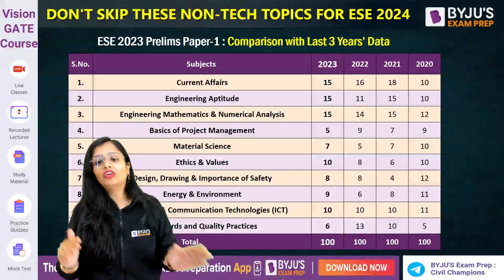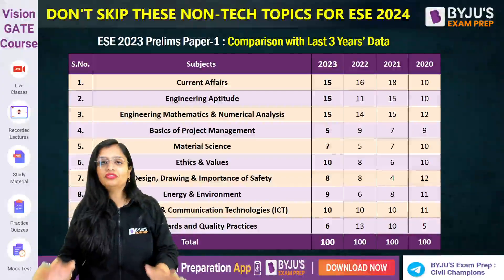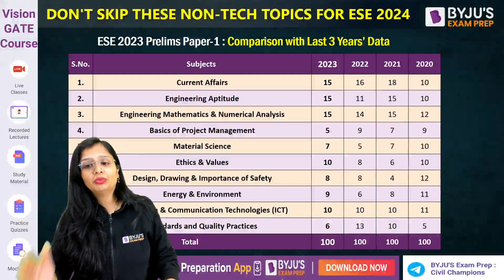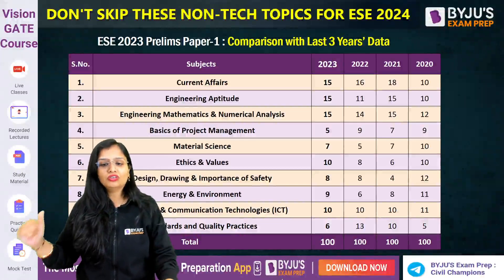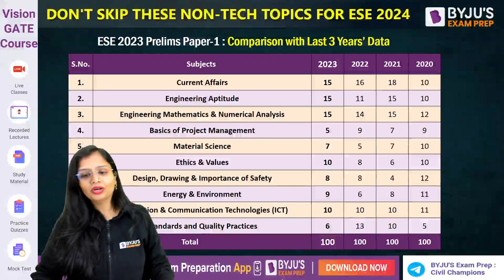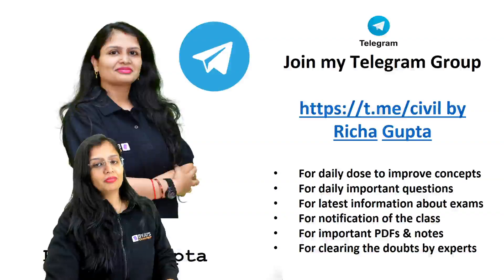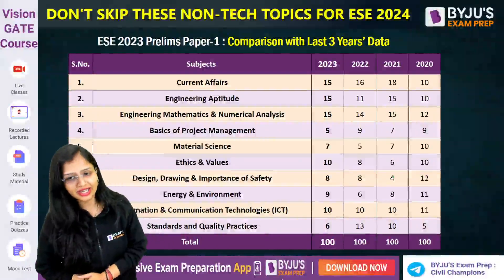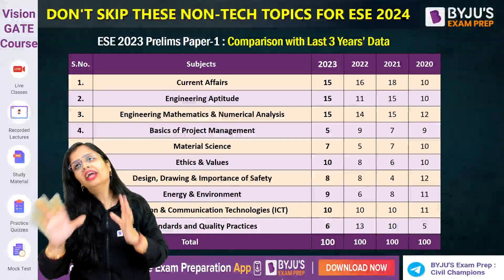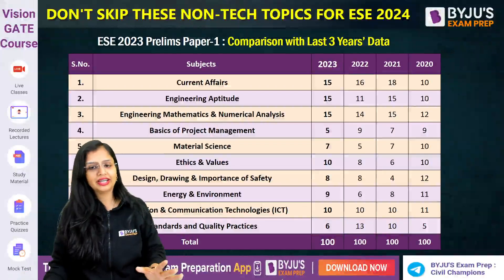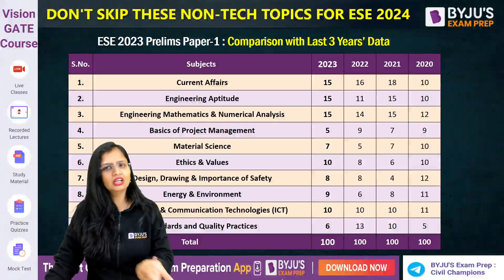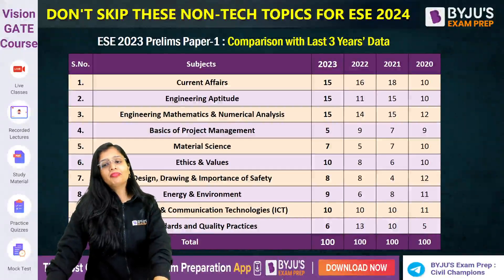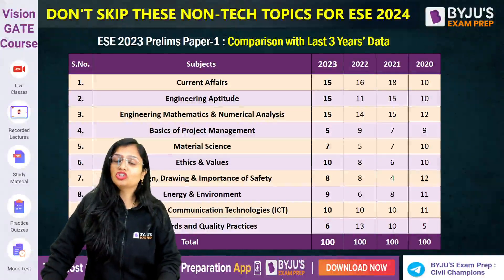If you want to see the number of questions asked, I have made a table for you showing ESE 2023, 2022, 2021, and 2020 Prelims Paper 1 data — you can check it out. Don't panic about Current Affairs; just review what you have prepared. Engineering Aptitude and Mathematics had 15 questions last year. Project Management, Material Science, and Ethics and Values are basics — you will be able to handle them.